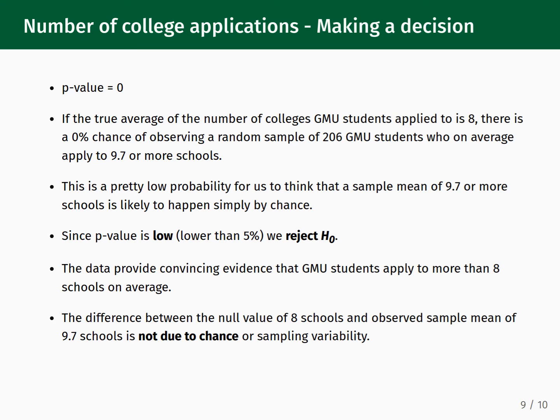What should we conclude now that we've determined the p-value to be equal to zero? Our analysis shows that if the true average number of colleges GMU students apply to is 8, then there is a zero percent chance of collecting a random sample of 206 GMU students who, on average, applied to 9.7 or more schools. Since the p-value is less than our pre-selected significance value of five percent, we reject the null hypothesis. We conclude that the data provide convincing evidence that GMU students apply to more than 8 schools on average, and the difference between the null value of 8 schools and the observed sample mean of 9.7 schools is not due to chance or sampling variability.